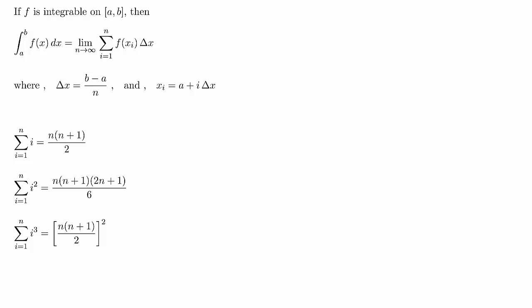How's it going? Let's take a look at evaluating an integral using the definition. So first we need to take a look at this: if we can integrate f on a to b, then the integral of f(x)dx from a to b is equal to the limit as n goes to infinity of the summation from i equals 1 to n of f(x_i) times delta x.